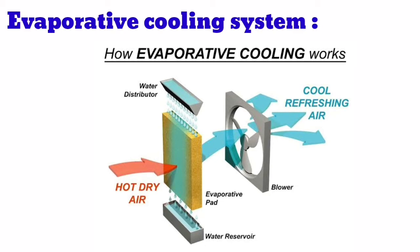As the hot dry air passes over the wet absorbent pad, some of the water evaporates. This cools the air in the same way moisture evaporating from your skin cools your body. The air leaves the cooler at a reduced temperature, which is dependent on the relative humidity of the air being drawn into the cooler.